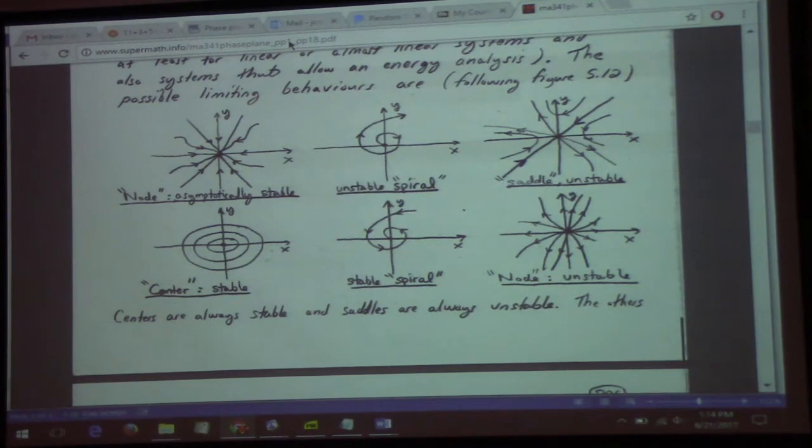If, on the other hand, you have alpha plus i beta t, where alpha is positive, that would be this case. e to the alpha t times sines and cosines. If alpha is positive, the radius, in some sense, is getting bigger and bigger. That's an unstable spiral.